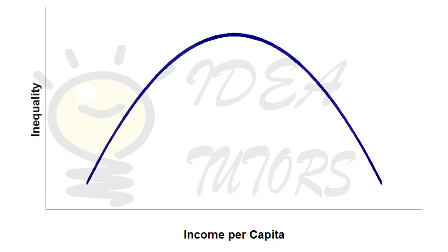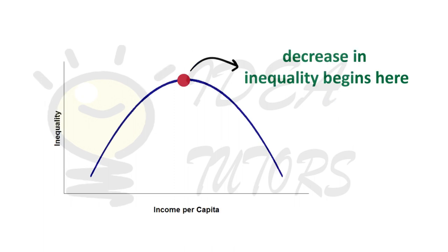The inverted U shape of the Kuznets Curve illustrates the basic elements of the Kuznets hypothesis, with income per capita graphed on the horizontal x-axis and economic inequality on the vertical y-axis. The graph shows that income inequality first increases, and then decreases after hitting a peak point as per capita income increases over the course of economic development.